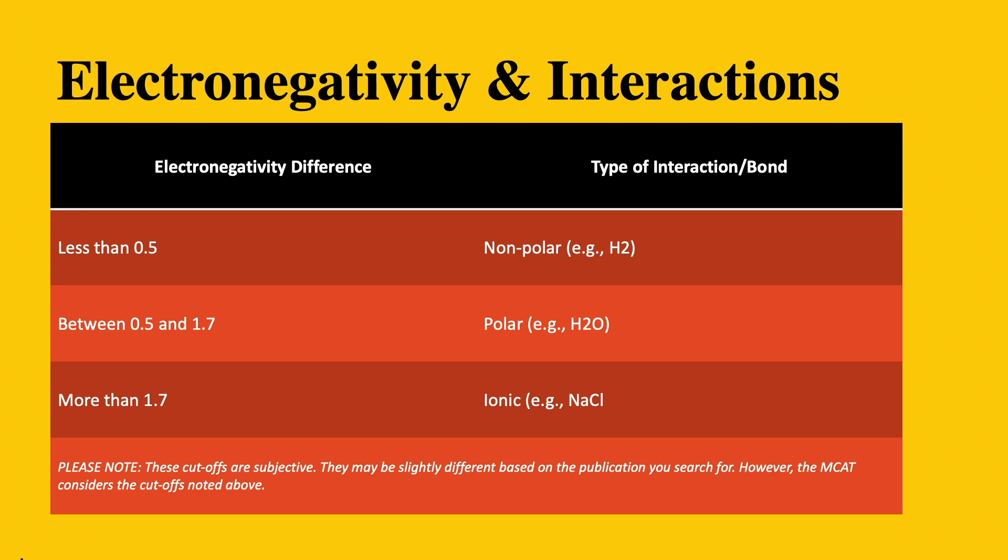If the electronegativity difference is less than 0.5, the type of interaction or the type of bond is non-polar. If it is between 0.5 and 1.7, it is considered polar. And if the electronegativity difference is more than 1.7, then it is considered an ionic interaction.